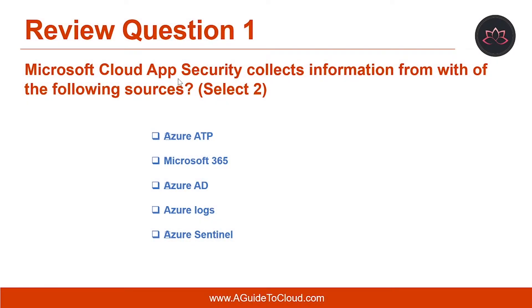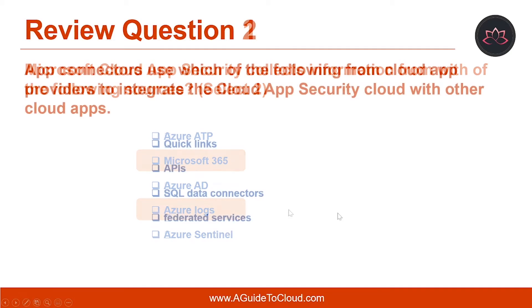Let's look at the first question. Microsoft Cloud App Security collects information from which of the following sources? The correct answers are Microsoft 365 and Azure Logs.